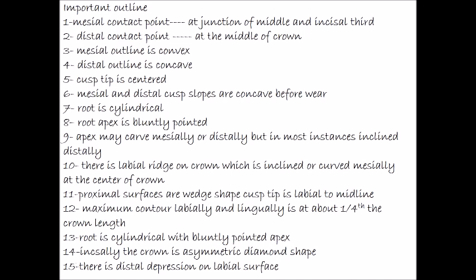The important outline — we should know where the contact point is. As we know, the canine does not have an incisal edge; it has a cusp tip. That's why another name for the canine is called 'cuspid.' We should know where the cusp tip lies, and also the mesial outline and the distal outline of the crown.